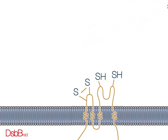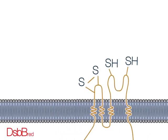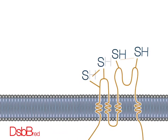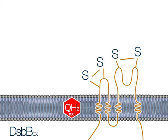The first periplasmic domain then re-oxidizes the second domain and transfers the electrons to quinones present in the membrane. The reduced quinones transfer the electrons to terminal electron acceptors.